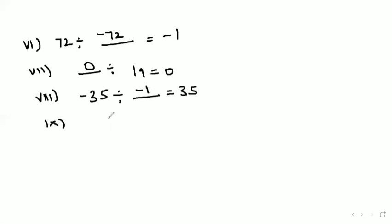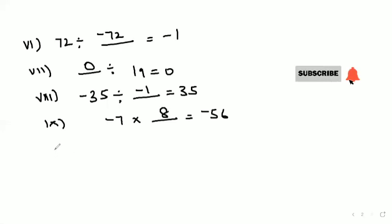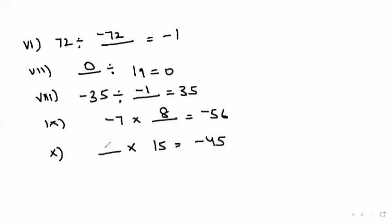Ninth part: minus 7 should be multiplied by what so as to get minus 56? It should be multiplied by 8. Tenth part: what should be multiplied by 15 so as to get minus 45? 15 should be multiplied by minus 3 to get minus 45. That's all about parts 6 to 10 of Question Number 3.